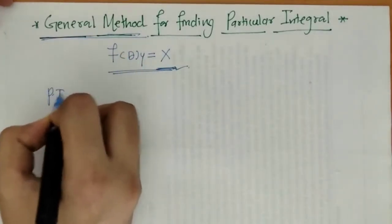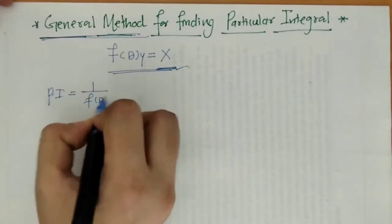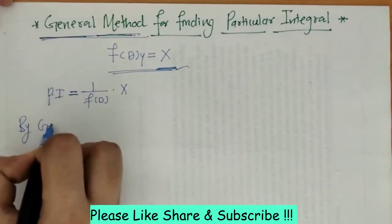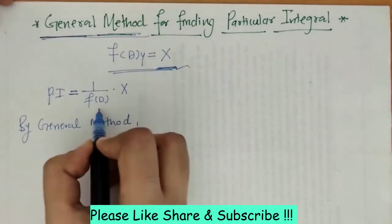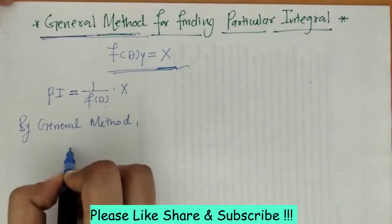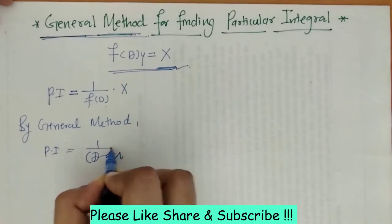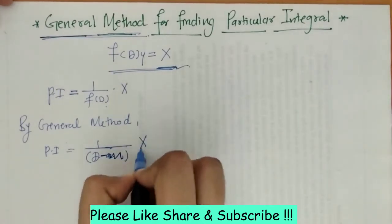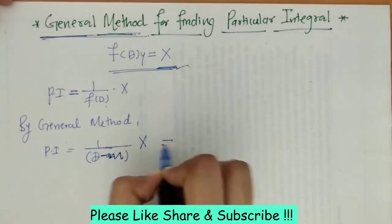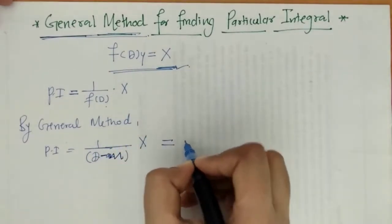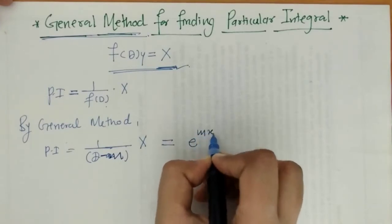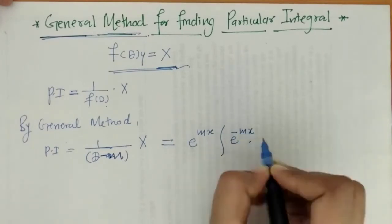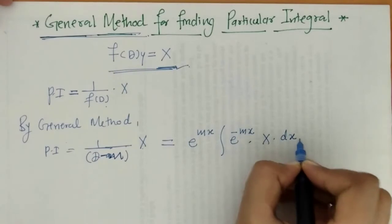We know that we have a formula for PI. By the general method, what we have to do is first reduce f(D) into linear factors. Let f(D) be reduced to the linear factor (D minus m). To apply this operator, we write e raised to mx, then in the integration we write e raised to minus mx multiplied by X, and integrate with respect to x.